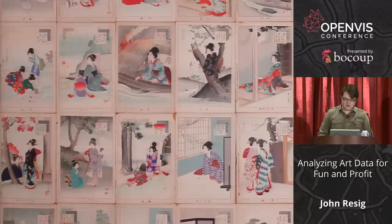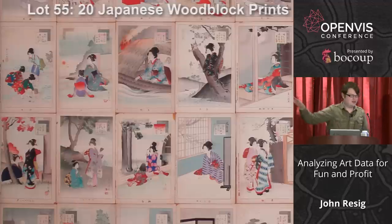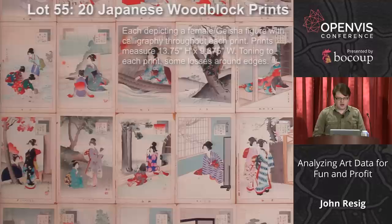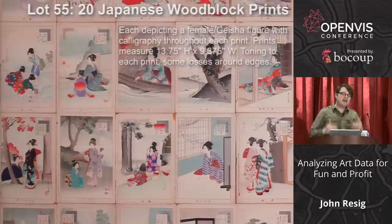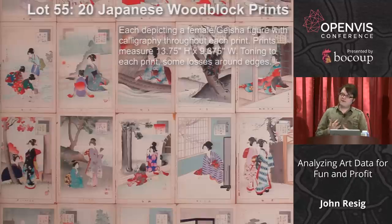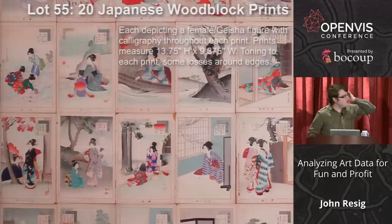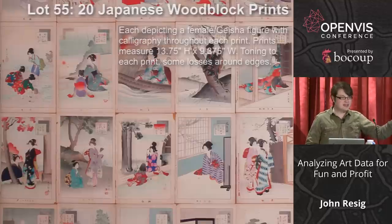To dive into my problem: sometimes lots of woodblock prints come up at auction, like Lot 55 here — 20 Japanese woodblock prints estimated at $400 to $600. Many auction houses don't have the staff to figure out what they have. They've correctly identified it's Japanese and depicts female figures, but beyond that they have no idea. That's the challenge: as a layperson, how do you figure out what something actually is?